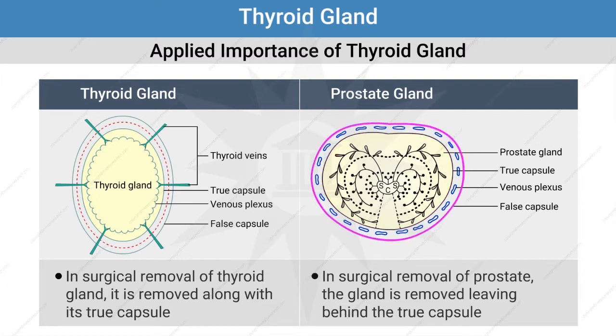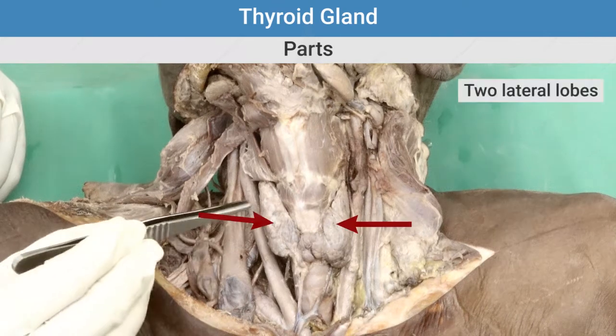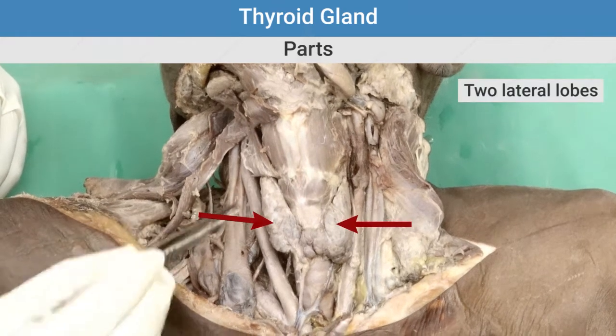Hence, during surgical removal of the prostate, the true capsule is left behind — whereas in thyroid gland removal, the thyroid gland is removed along with the true capsule. The thyroid gland consists of two lateral lobes.